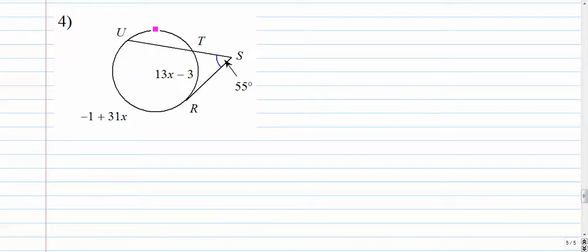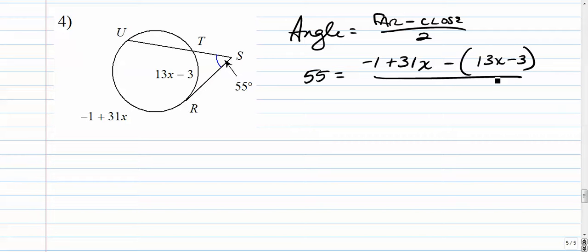Number four: same thing. Angle equals far away arc minus close arc over two. 55 equals negative one plus 31x minus the close arc. The close arc is a binomial, so we have to put it in parentheses, over two. That's really a point of confusion for a lot of kids: when that close arc is a binomial, we have to put it in parentheses because there's a minus sign in between them, and the minus sign will affect everything after it.